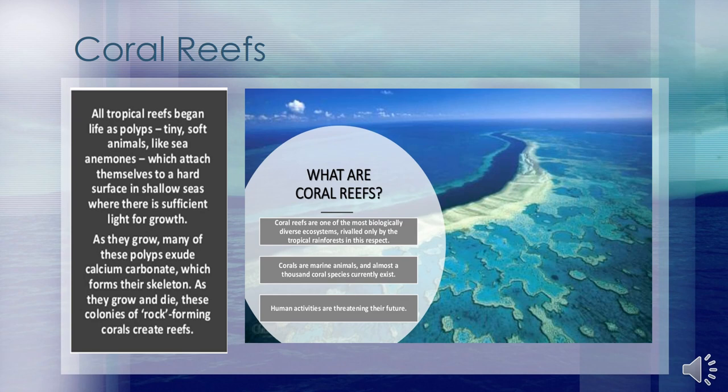Coral reefs are often described as the rainforests of the sea on account of their rich biodiversity. Some coral is believed to be 2 million years old, although most is less than 10,000 years old. Coral reefs contain nearly a million species of plants and animals, and about 25% of the world's sea fish breed, grow and evade predators in coral reefs. Some of the world's best known coral reefs include Australia's Great Barrier Reef and many of the reefs around the Philippines and Indonesia.